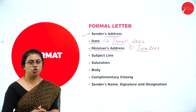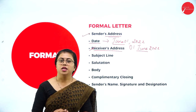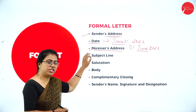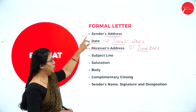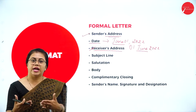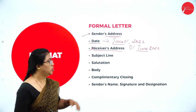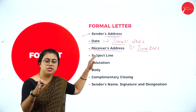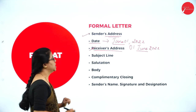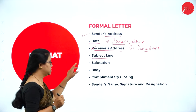You have to address the receiver by their post. For example, if you are writing to your principal, even if you know their name, you write the designation — the principal. You need to write the official address only, because you are related to that person at an official level. You are sending this letter to the official in the office, not to their home. Then we have the subject line, which conveys to the receiver what you are writing about.